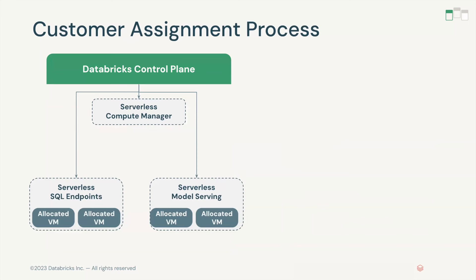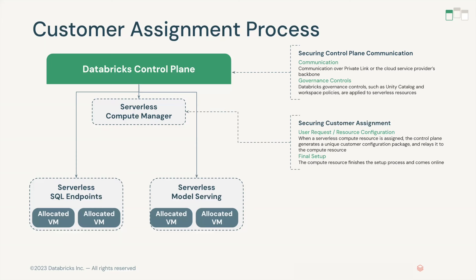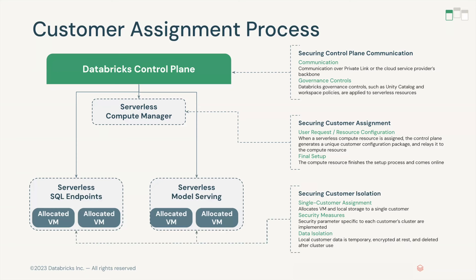Assignment occurs when a Databricks user requests a new serverless compute resource. The serverless compute manager will assign one or more unallocated VMs to the new compute resource and provide them with the compute resource configuration package, which contains the configurations and credentials needed to finish starting up. All communication happens over private link or the cloud service provider's backbone, and governance controls can be applied to these serverless resources. In parallel, the serverless compute manager configures a new security group for the new set of VMs that will not allow them to communicate with each other. Prior to assignment, VMs cannot talk to anything other than the serverless compute manager, and all resources are assigned to a single customer.